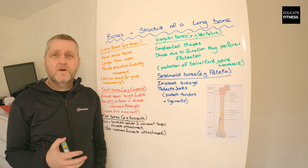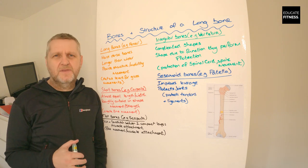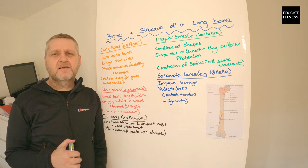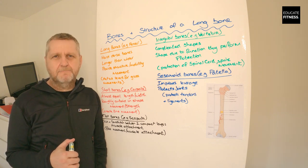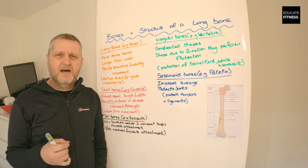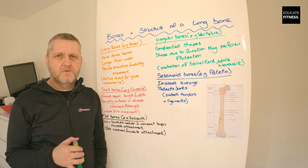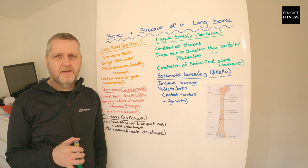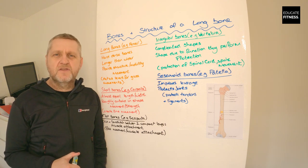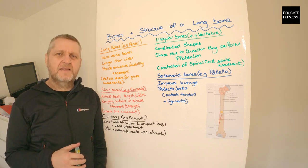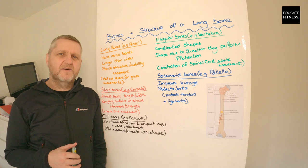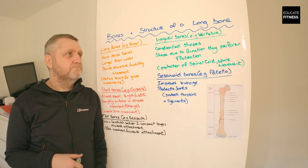Before we get started, what is a bone? Bones are calcified connective tissue with their own blood supply. They're hard in texture and they contain important minerals that are required by the body. There are 206 bones in the human skeleton and they can be classified depending on their shape or their form.